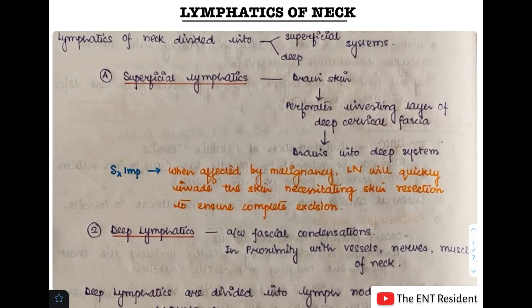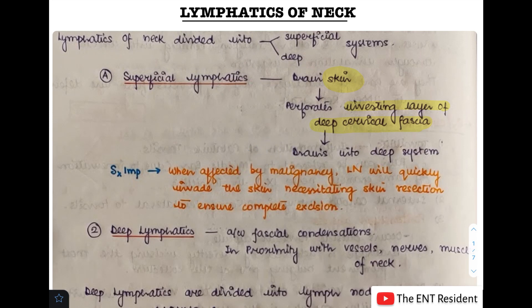Today we will be discussing about lymphatics of the neck. The lymphatic system draining all the structures present in the neck can be divided into superficial and deep systems. The superficial lymphatics drain the skin, then perforate the investing layer of the deep cervical fascia and drain into the deep lymphatic system. The surgical importance of superficial lymphatics is that in malignancy, lymph nodes will quickly invade the skin, making skin resection necessary for complete excision.